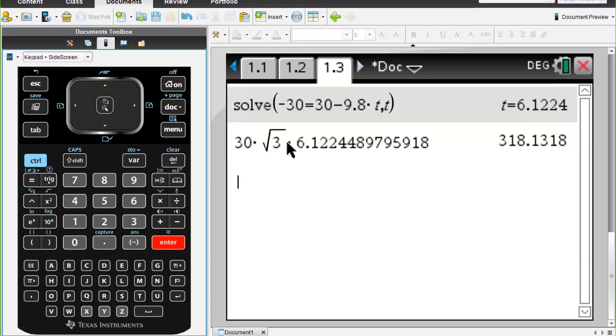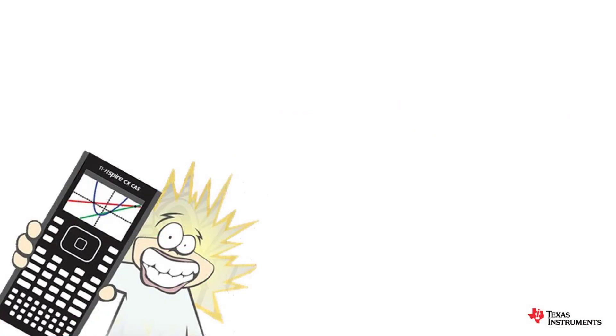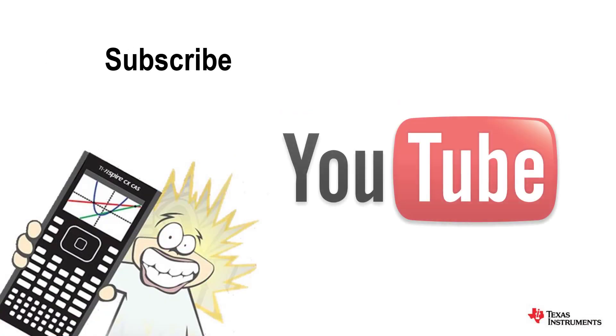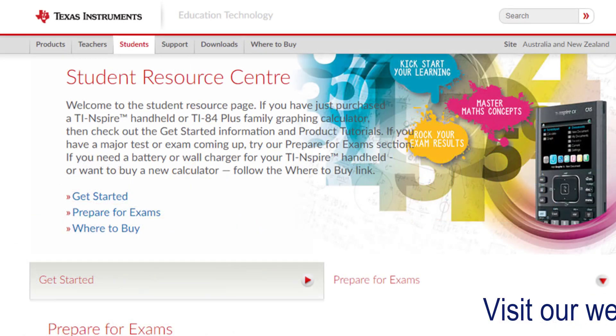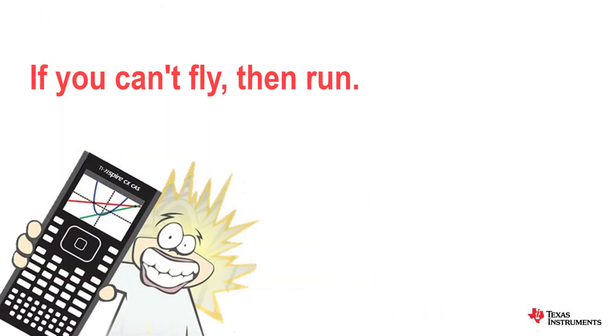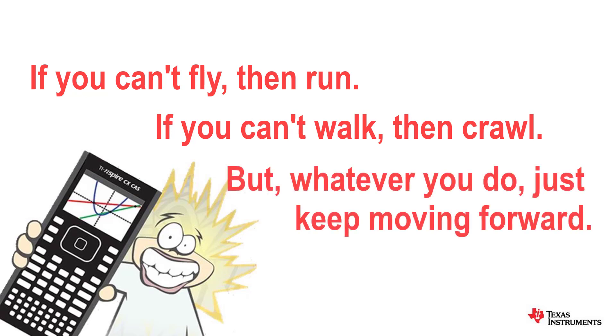We find that the horizontal distance traveled by the ball correct to two decimal places is 318.13 meters, or you could say it was 31,813 centimeters.